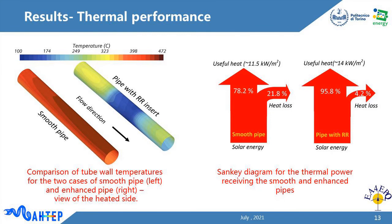Thermal performance in terms of 3D wall temperature is presented here, considering the full pipe in the second fraction for both smooth and enhanced pipes. As shown on the left, the temperature difference between the two tubes at the bottom part is significant. Moreover, the Raschig ring porous insert not only affects the length covered by its dimension, but its upstream and downstream are also benefited from cooling effects compared to the smooth pipe. The Sankey diagrams for two pipe models show that the Raschig ring insert could increase useful heat up to 21% and reduce thermal losses from 21.8% to only 4.2% of total solar energy received.